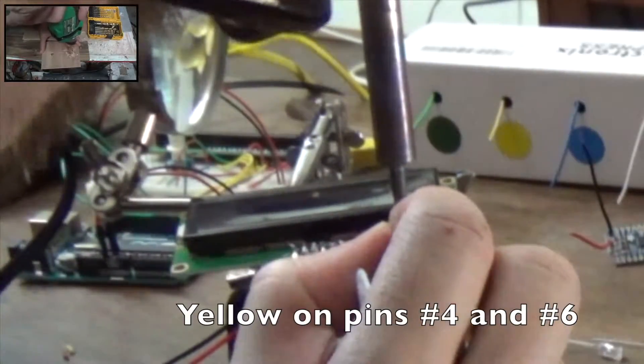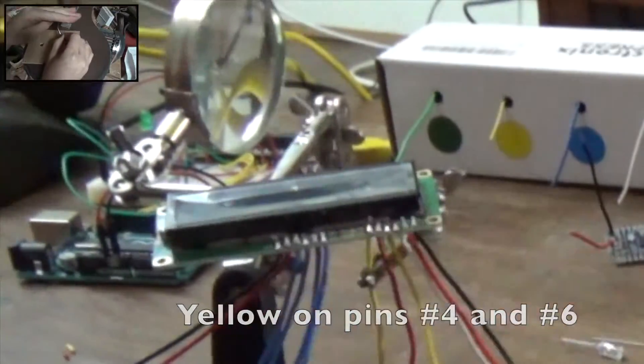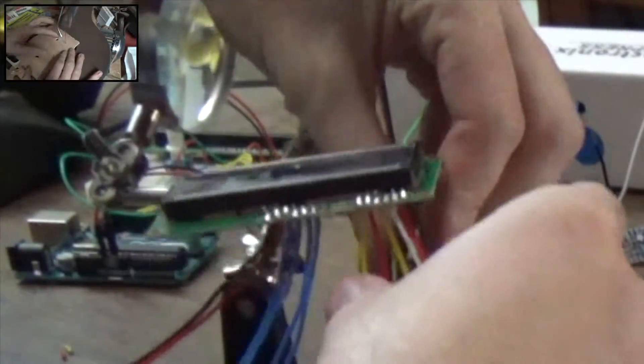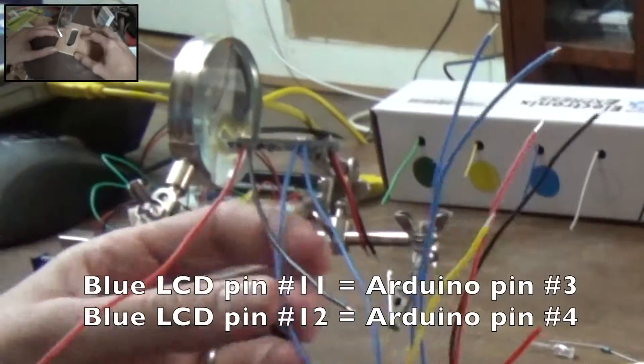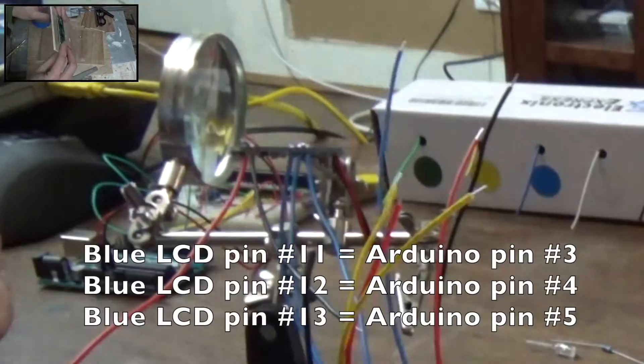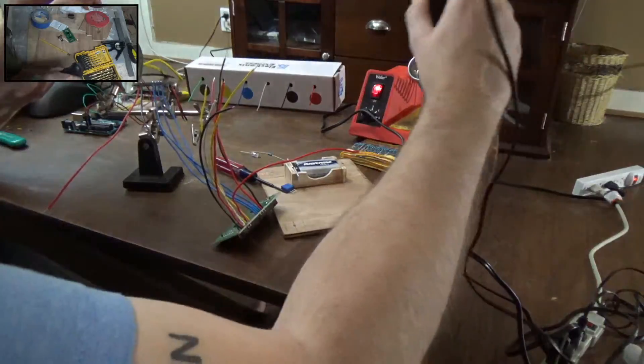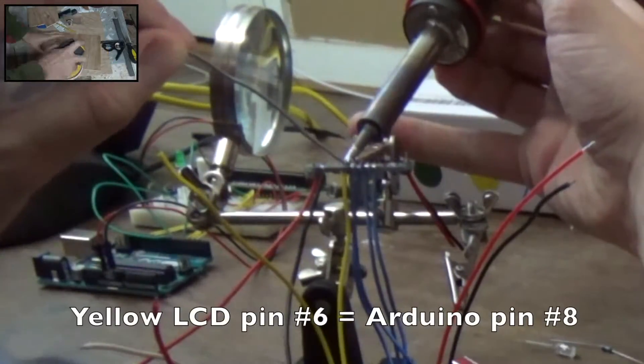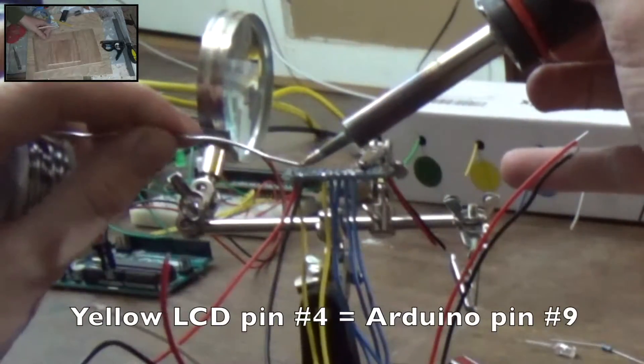When connecting the blue wires to the Arduino, pin 11 from the LCD goes to pin 3 on the Arduino, 12 to 4, 13 to 5, and 14 to 6. I'm connecting the yellow LCD pin 6 to Arduino pin number 8 and the yellow LCD pin number 4 to Arduino pin 9.